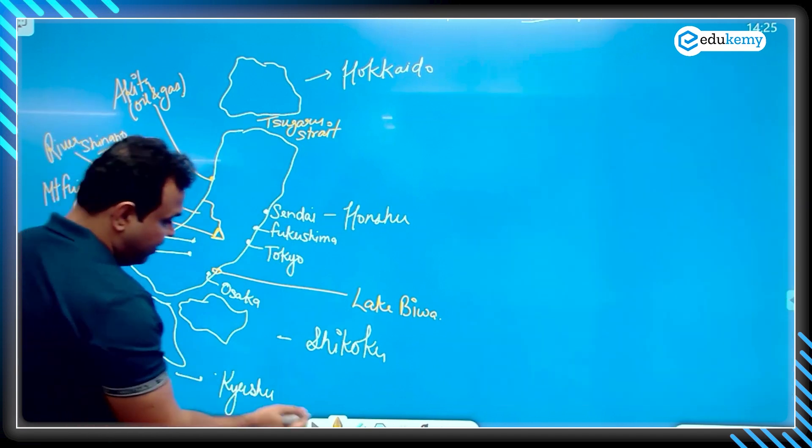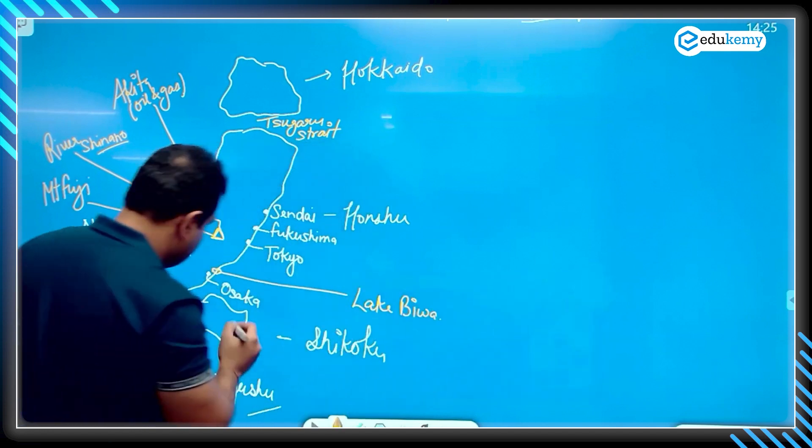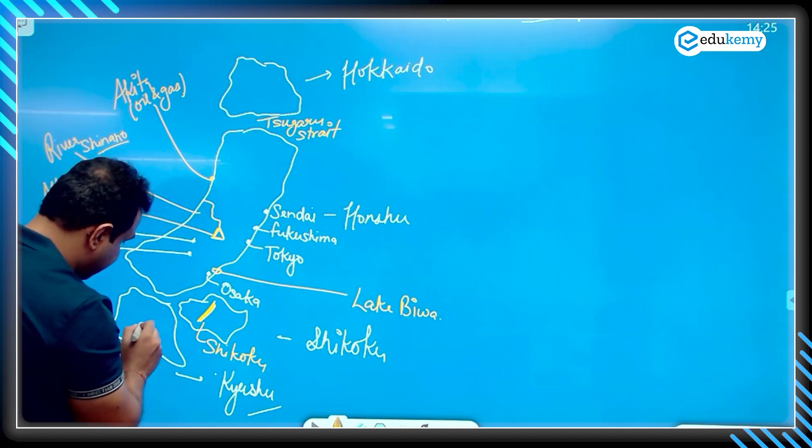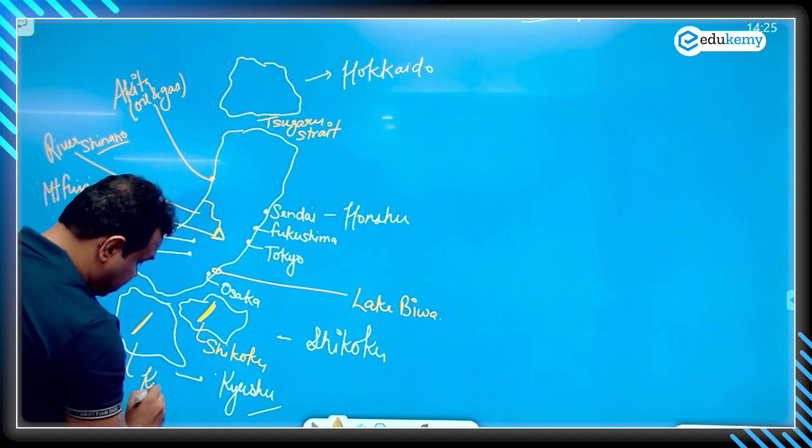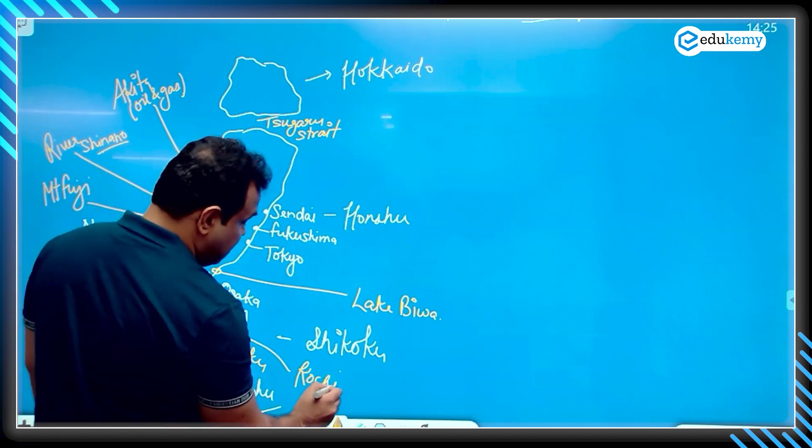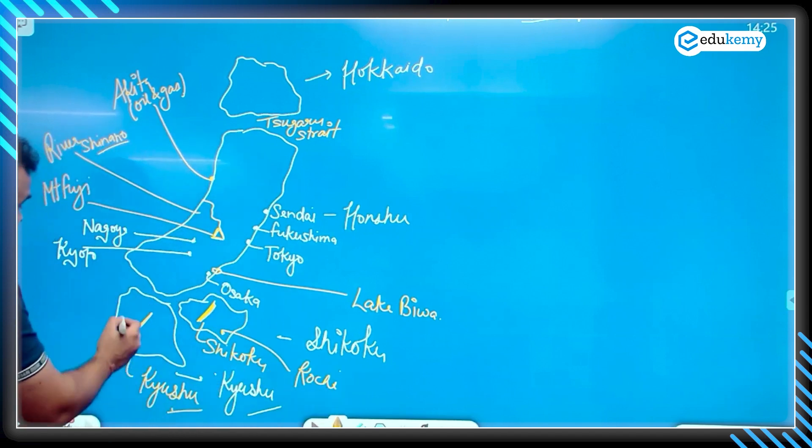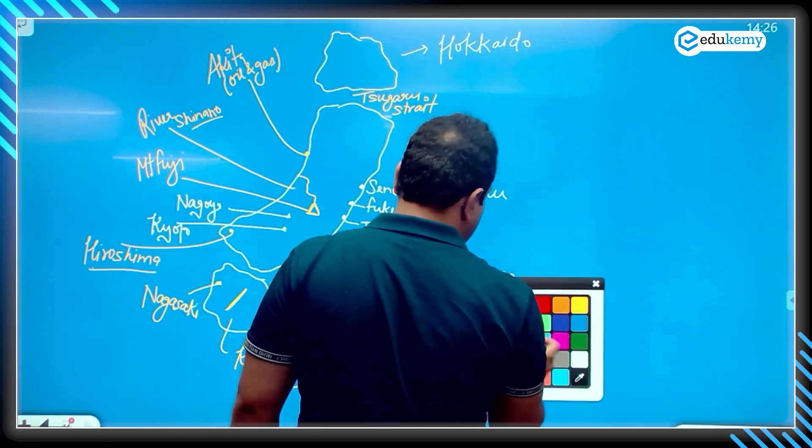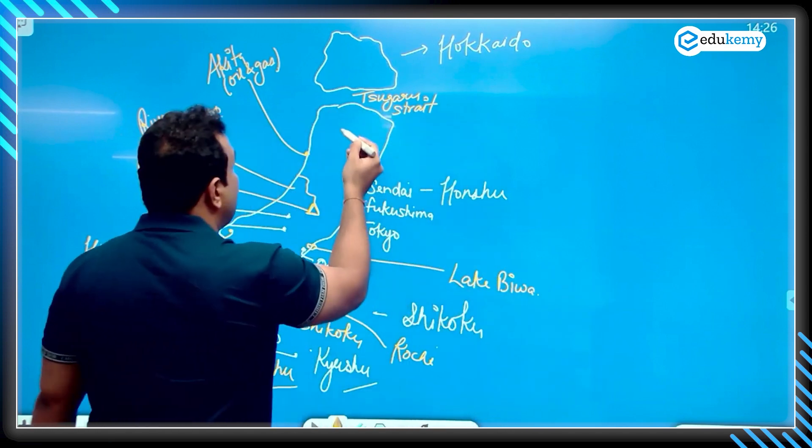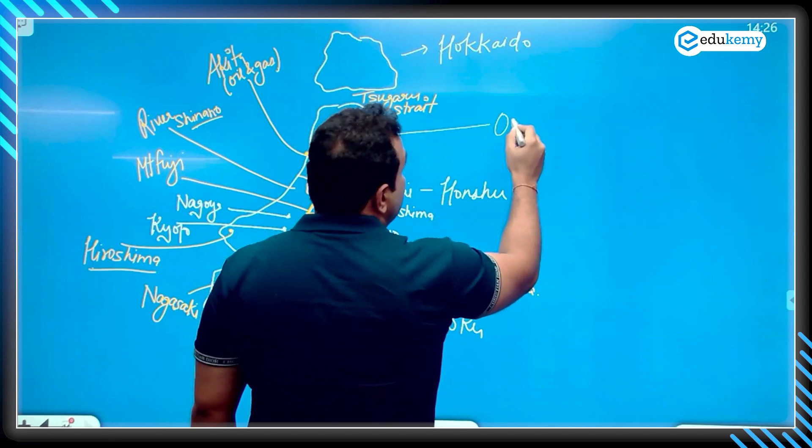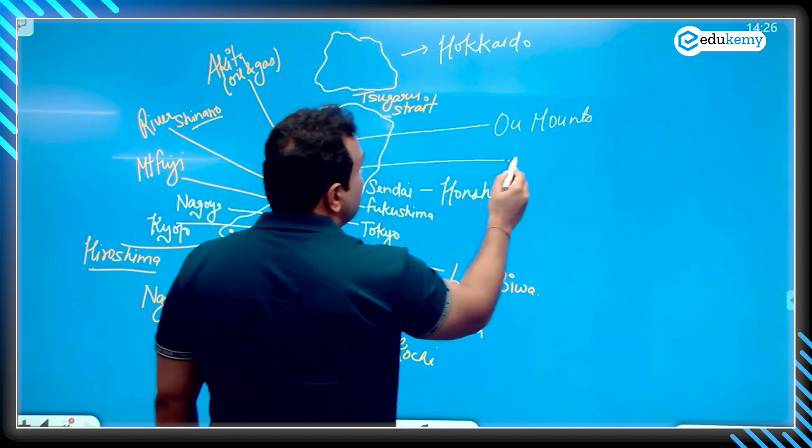Here we have Shikoku mounts also on Shikoku islands. In Kyushu island, we have Kyushu mounts. We have a place Kochi, but this Kochi is not India's Kochi. In Japanese language, it has some meaning. Here we have Nagasaki, Hiroshima. We also have mounts and here we have Kato.